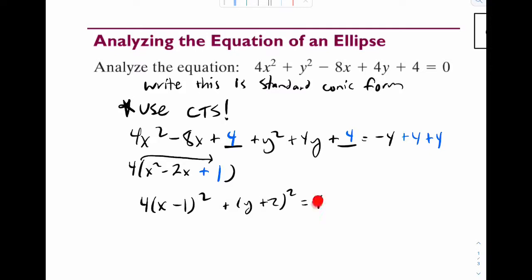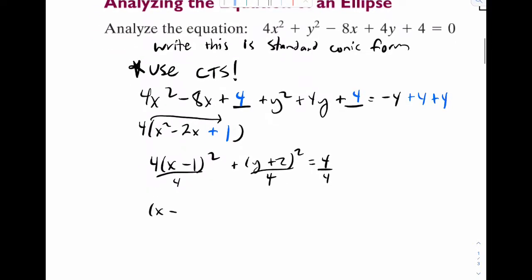And the final step is to make this into 1. So just divide everything by 4. And here's our answer. That's our standard conic form. And we are done.